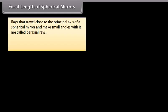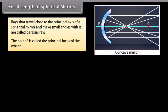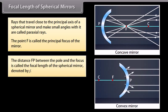Focal length of spherical mirrors. Rays that travel close to the principal axis of a spherical mirror and make small angles with it are called paraxial rays. The point F is called the principal focus of the mirror. The distance FP between the pole and the focus is called the focal length of the spherical mirror, denoted by F. The relationship between focal length and radius of curvature is: F = R/2.